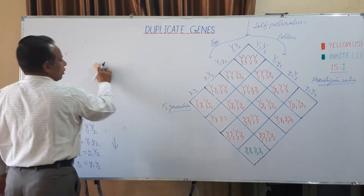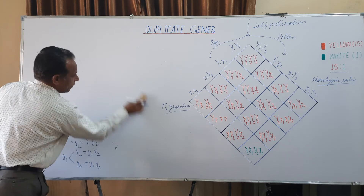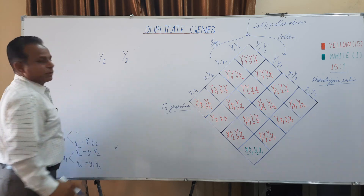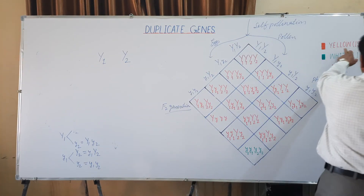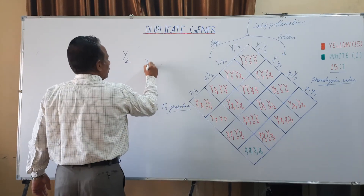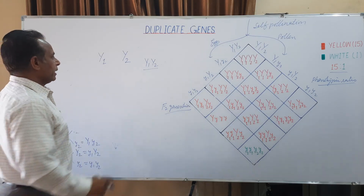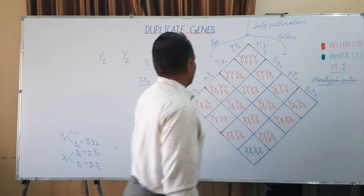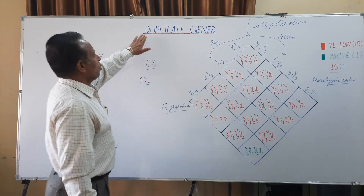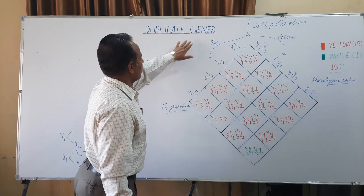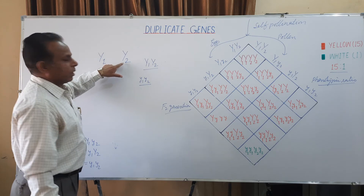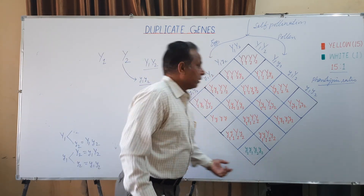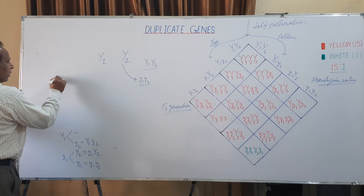These results of the F2 generation reveal that the non-allelic dominant genes Y1 and Y2 have identical effects on the endosperm — that is, yellow — even when both are present together as Y1 and Y2, and in the recessive condition of both, the endosperm color becomes white. Such interaction is known as dominant duplicate genes because each gene, Y1 and Y2, is dominant, and in the recessive condition they have a different phenotypic effect. This should not be confused with complementary genes, which we have already discussed in a previous video.